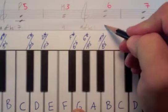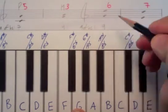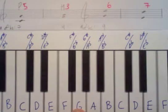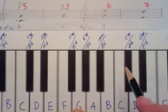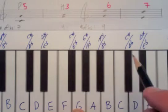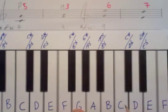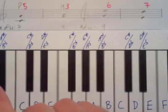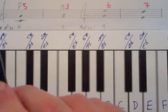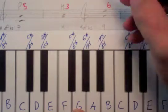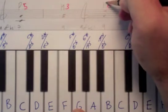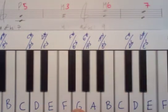So G to E has nine half steps. Looking at the chart — the vertical column of generic interval is six, the horizontal column is nine half steps — and where those meet, you'll see that G to E is a major sixth. So capital M, sixth.